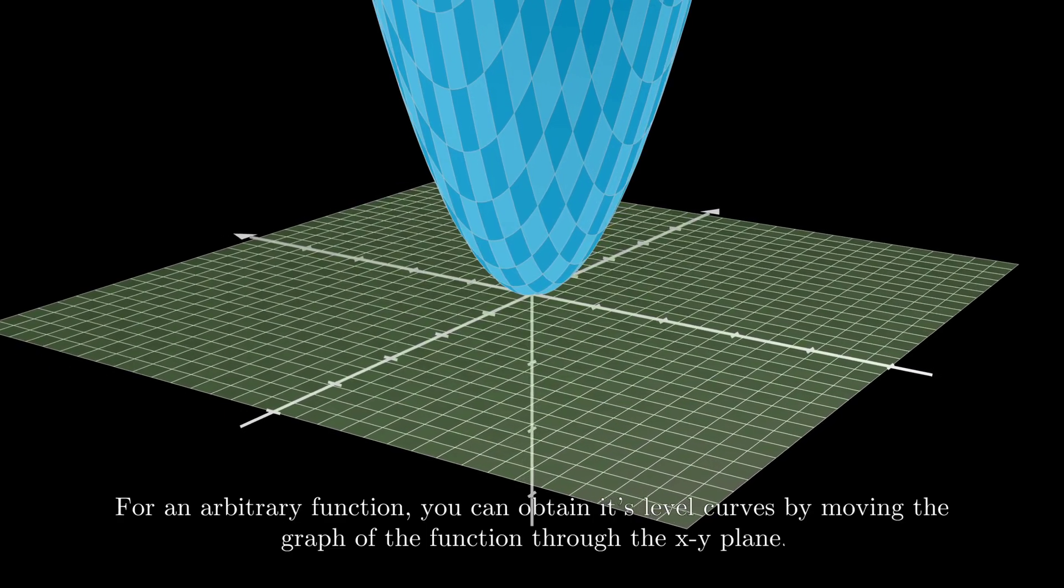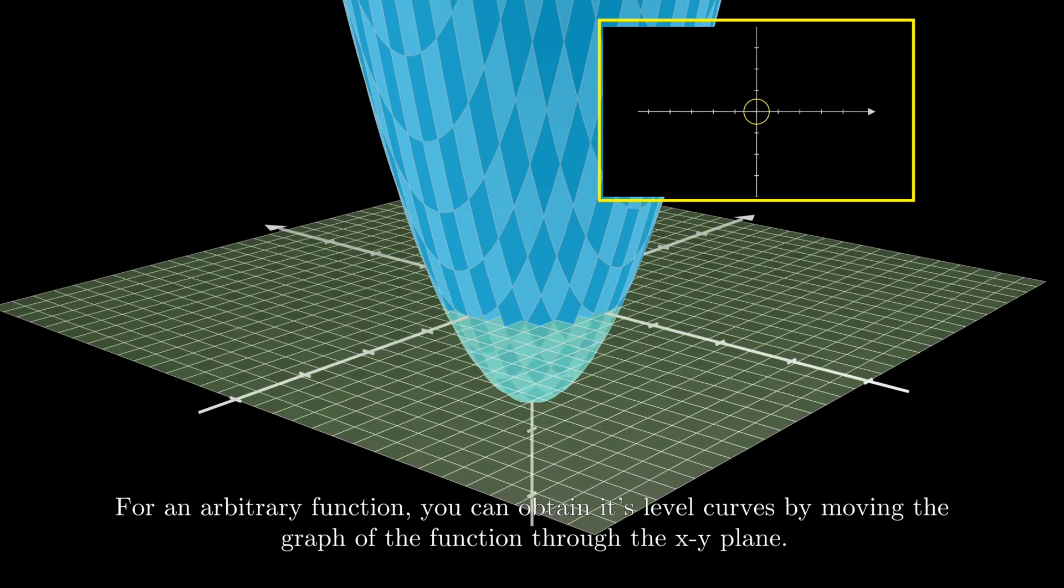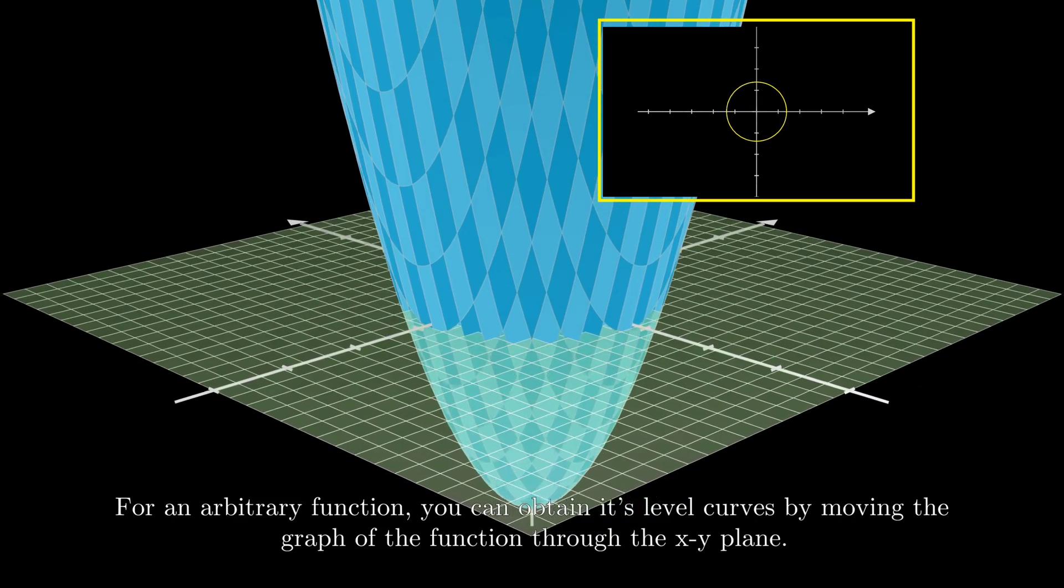For an arbitrary function, you can obtain its level curves by moving the graph of the function through the XY plane.